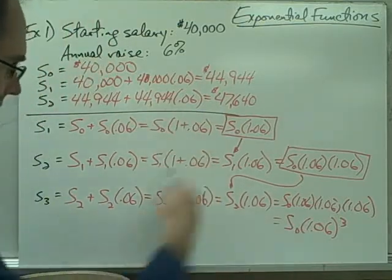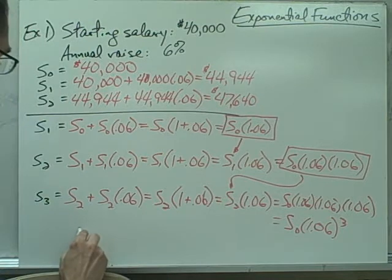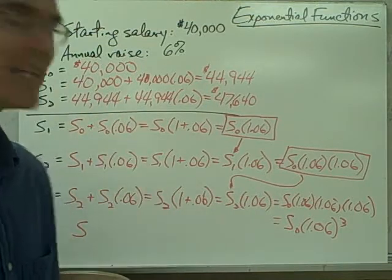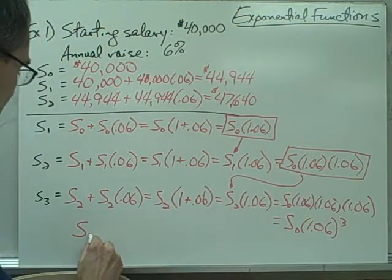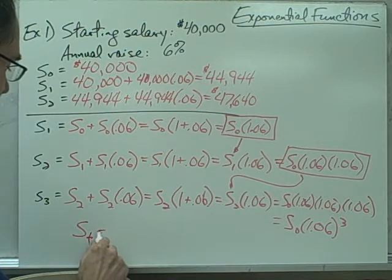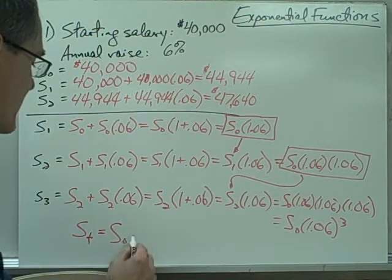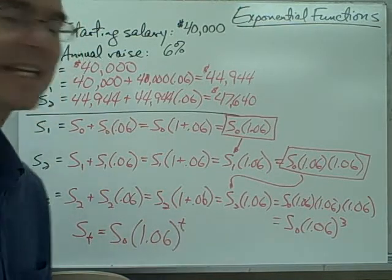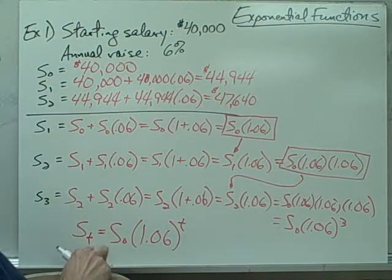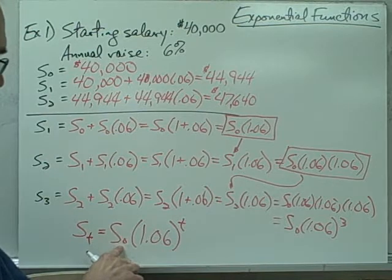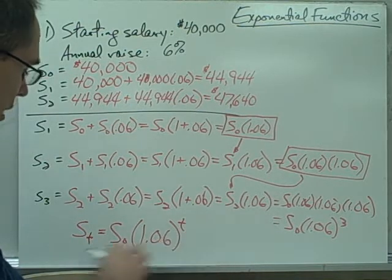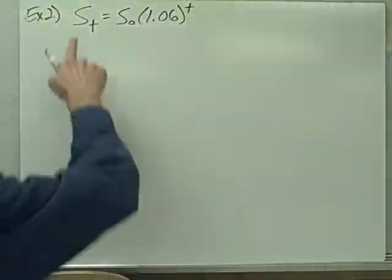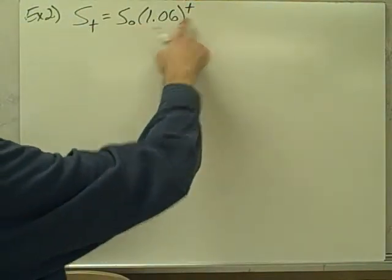If I keep going, I just keep repeating this pattern. Essentially I've got a formula now that I can use to calculate my annual salary in any year. I'll write this as S sub t equals S sub zero times 1.06 to the power of t, where t stands for time. I can calculate my salary for any year by taking my initial salary and multiplying it times 1.06 to the power of whatever that year is.